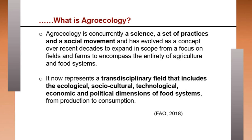Agroecology is concurrently a science, a set of practices and a social movement, and has evolved as a concept over recent decades to expand its scope from a focus on fields and farms to encompass the entirety of agriculture and food systems. This subject evolved over decades — initially it was simple production, then dimensions were added, and finally the addition of policy and government became part of agroecology.